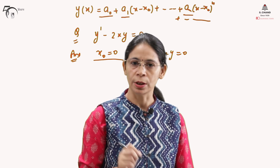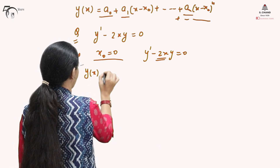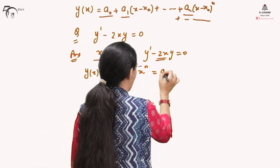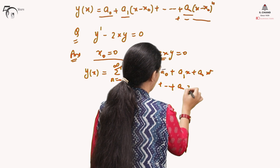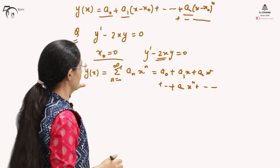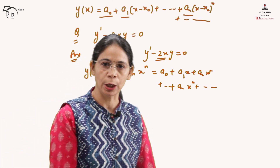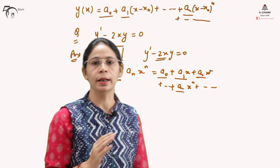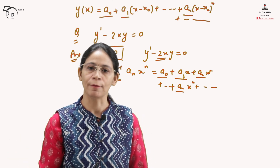Therefore, the solution for this differential equation can be written as sigma (n from 0 to infinity) of a_n · x^n. Expanded: a_0 + a_1·x + a_2·x² + ... + a_n·x^n + and so on. The strategy is that we have assumed this solution by deciding that x = 0 is an ordinary point. Now we need to substitute it back in the given differential equation to find out the values for these unknown constants.